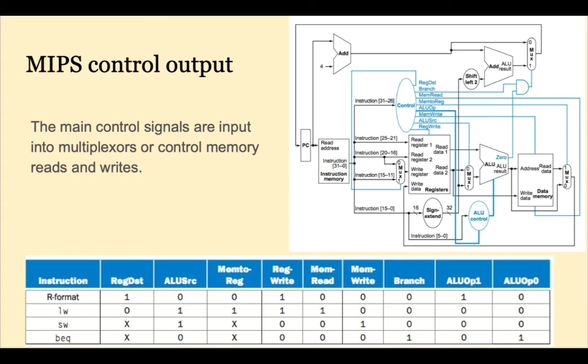The table shows the control signal settings for the four types of instructions: R-type, load word, store word, and branch equal.